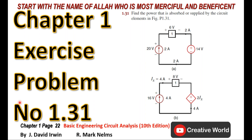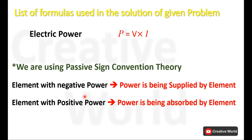Welcome to Creative World viewers. Today I will solve exercise problem number 31. In this scenario we will be using the electrical power formula: voltage multiplied by current, and we will also be using passive sign convention theory. According to this theory, the element with negative power will be considered as a power supplier, and the element with positive power will be considered as a power absorber.